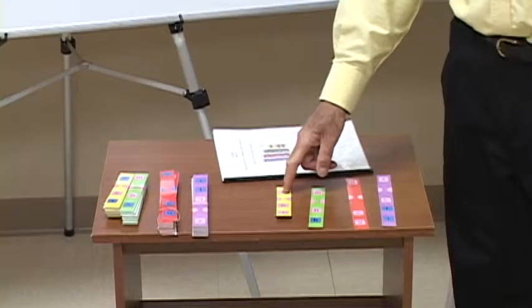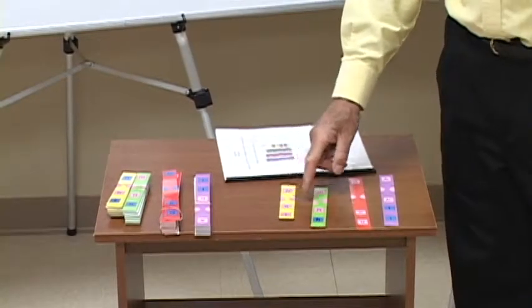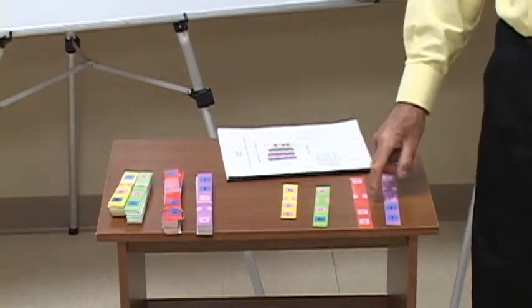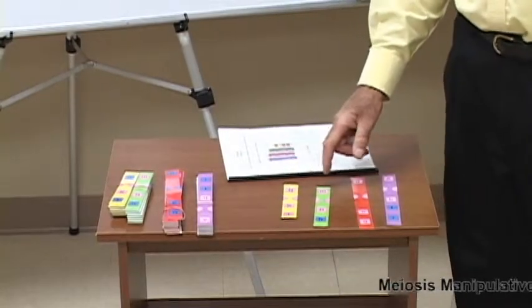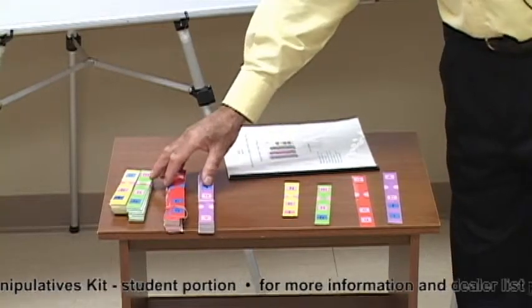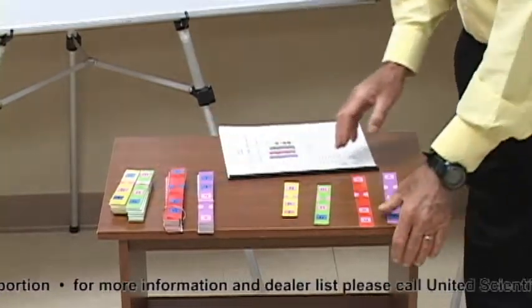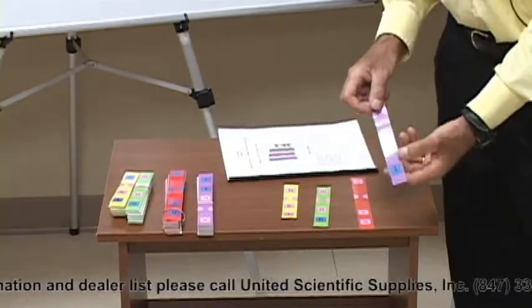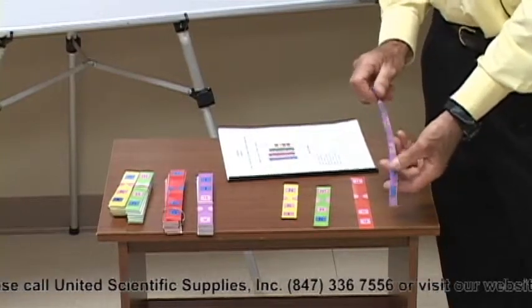Student chromosomes have the same alleles and the same color scheme as the teacher chromosomes. There are 10 sets of chromosomes for a total of 240 pieces. This is enough to allow a classroom of 30 to work in groups of three.